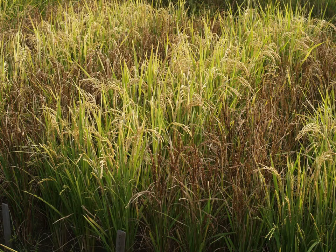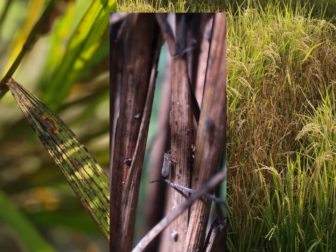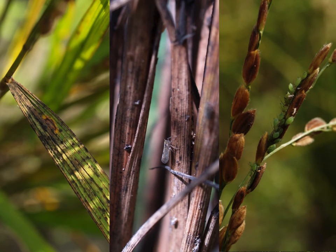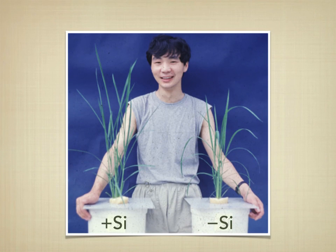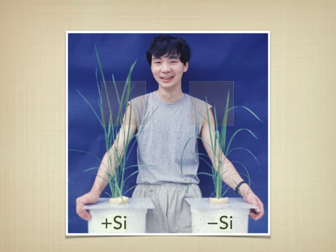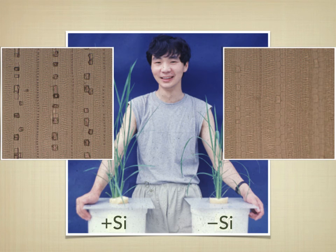When silicon accumulation is not sufficient, rice becomes sensitive to pathogens such as blast, powdery mildew, and insect pest attack. These beneficial effects of silicon are mostly attributed to the deposition of silicon in different tissues. A dense deposition of silicon as phytoliths can be seen in rice leaves, and this deposition functions as a physical barrier to protect the plants from various stresses.